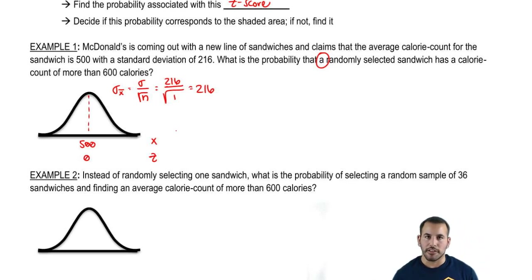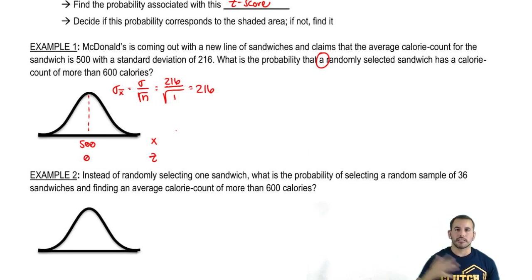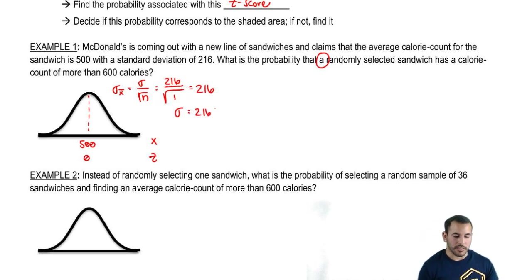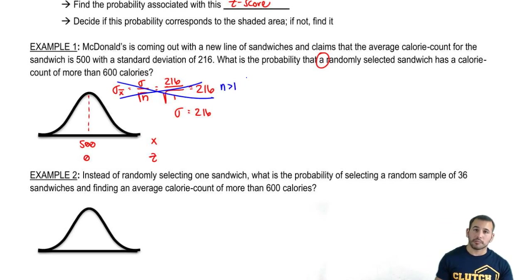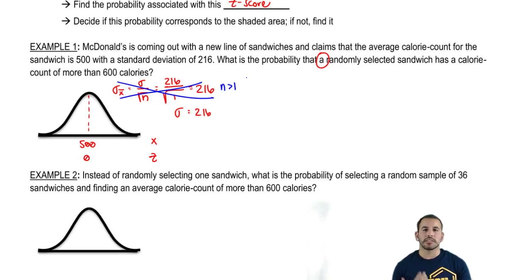Either way, even if you weren't sure whether it's sampling or not — even if you computed the standard error, you'd still get the same result. The standard error would still equal the standard deviation because dividing by the square root of 1 doesn't change anything. This applies for sample sizes greater than 1. Here we're just using standard deviation and mean, so it doesn't really change.